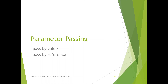Today I'm going to begin with parameter passing, something I talked about last time. The basic idea of parameter passing is how information is being passed to your functions. We have two different ways to do that: pass by value, which passes the contents of a variable to a function — essentially making a copy — and pass by reference, which passes the address or location of the variable to the function.